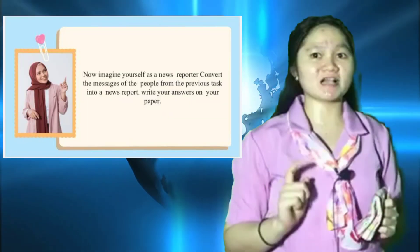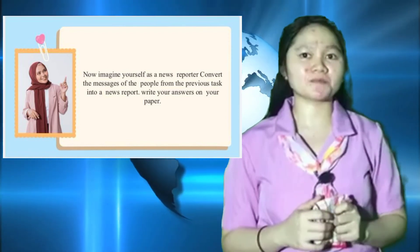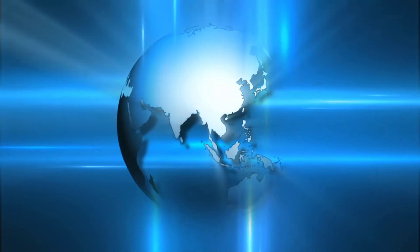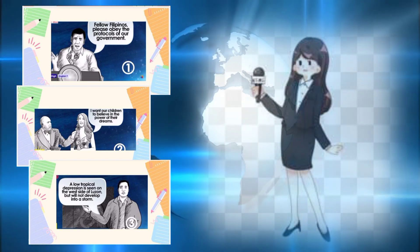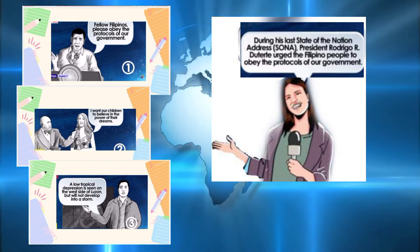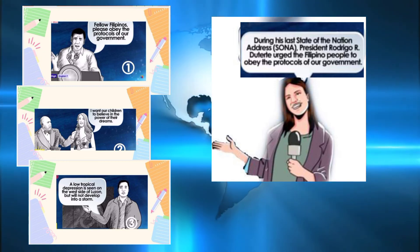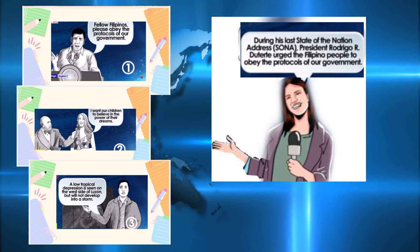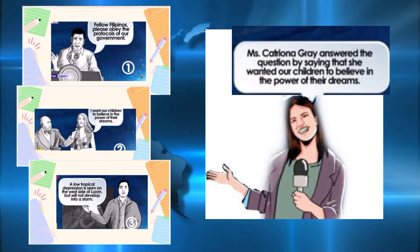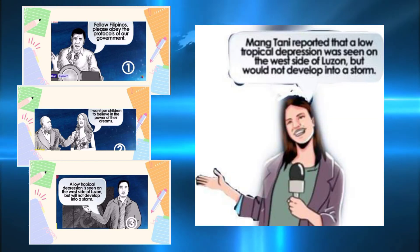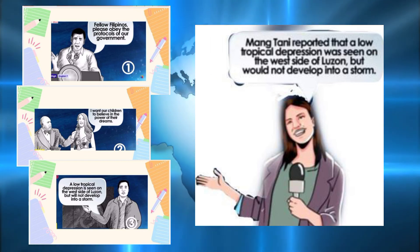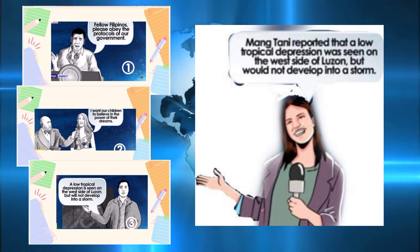Now imagine yourself as a news reporter. Convert the messages of the people from the previous task into a news report. Here are the possible answers: During his last State of the Nation Address, President Rodrigo R. Duterte urged the Filipino people to obey the protocols of our government. Ms. Catriona Gray answered the question by saying that she wanted our children to believe in the power of their dreams. Mung Tani reported that the low tropical depression was seen on the west side of the sun but would not develop into a storm.